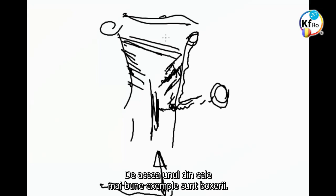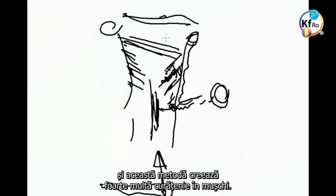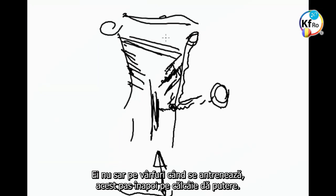That's why, one of the best examples of these are boxers. They always jump, and they go back on their heels. They always fall back on the heels to defend themselves. That falling back, creates a lot of clearance in the muscle. It's not the way they jump on their toes, when they practice. This, moving backwards, the heels, gives you that strength.